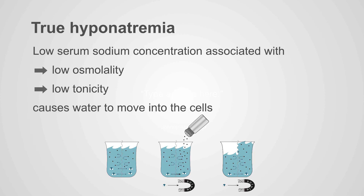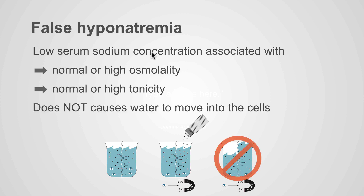True hyponatremia is when you have a low serum sodium concentration associated with low osmolality and low tonicity, and it will cause water to move into the cells as they move into the relatively hypertonic intracellular compartment. Water shifts into the cells and causes them to stretch, and that will cause symptoms. False hyponatremia is when you have a low serum sodium concentration but the extracellular osmolality or tonicity is normal or high. If it's normal, you'll get no movement. If the extracellular tonicity is even higher than the intracellular tonicity, you'll get movement of water out of the cells — but in false hyponatremia, water does not flow into the cells, which is why we call it false hyponatremia.